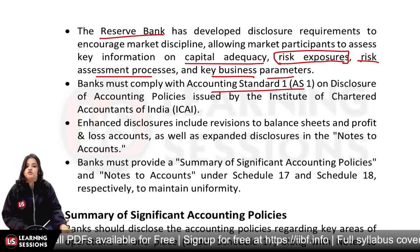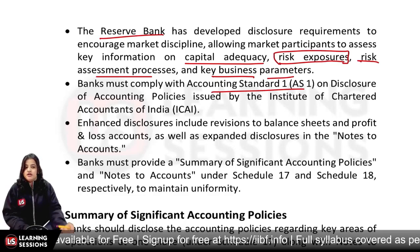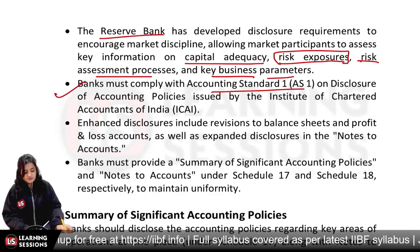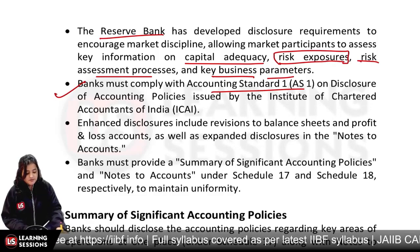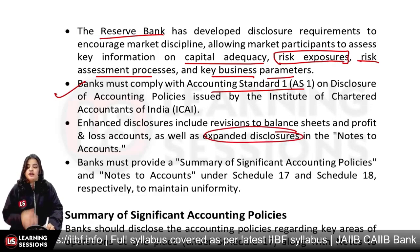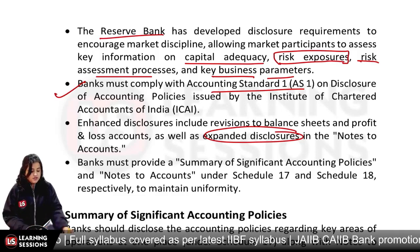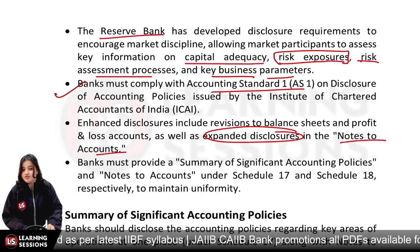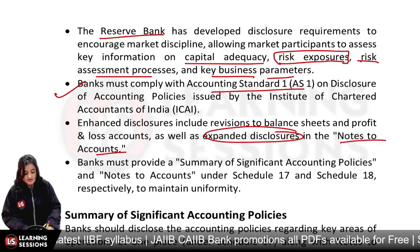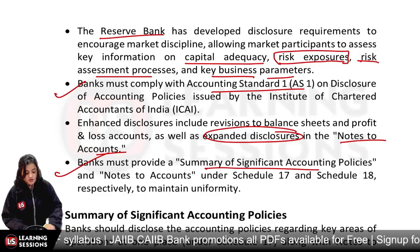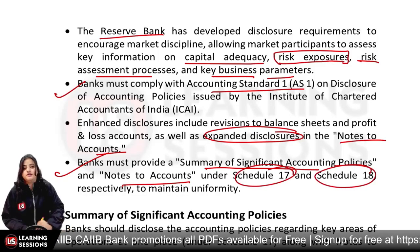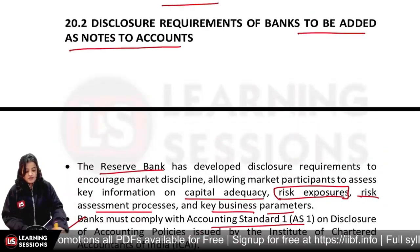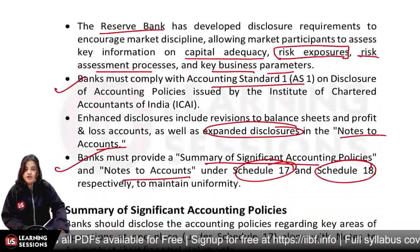All these disclosures are mandatory. Accounting Standard 1 on disclosure of accounting policies also applies. Banks comply and give detailed, expanded disclosure. In the notes to accounts, you have to show a lot of information. Summary of significant accounting policies and notes to accounts have to be given in Schedule 17 and Schedule 18. Banks have to add these disclosure requirements as notes to accounts.